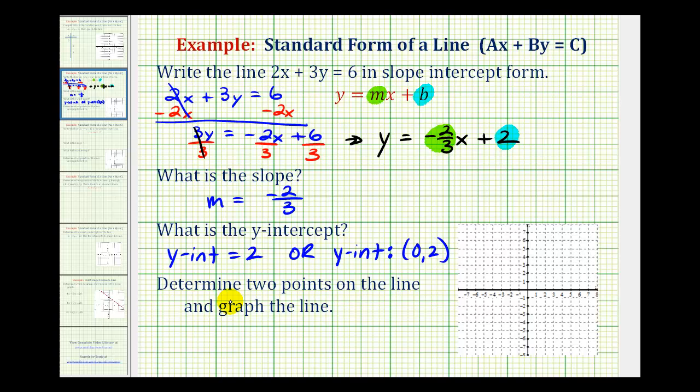And now for the last part, they ask us for two points on the line and then also graph the line. Well, one of the points would be the y-intercept. Let's go ahead and list that.